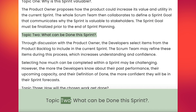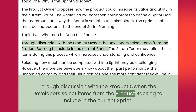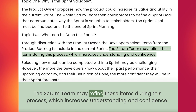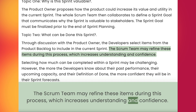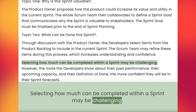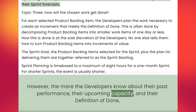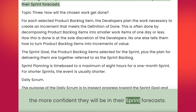Topic 2: What can be done this sprint? Through discussion with the product owner, the developers select items from the product backlog to include in the current sprint. The Scrum team may refine these items during this process, which increases understanding and confidence. Selecting how much can be completed within a sprint may be challenging. However, the more the developers know about their past performance, their upcoming capacity, and their definition of done, the more confident they will be in their sprint forecasts.